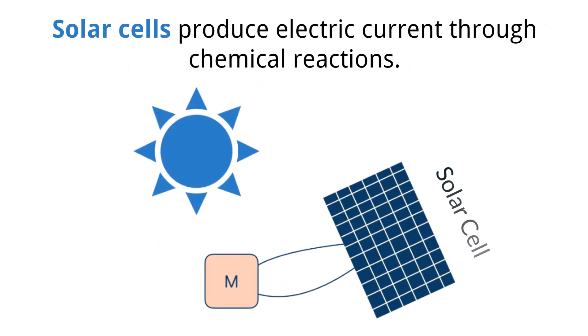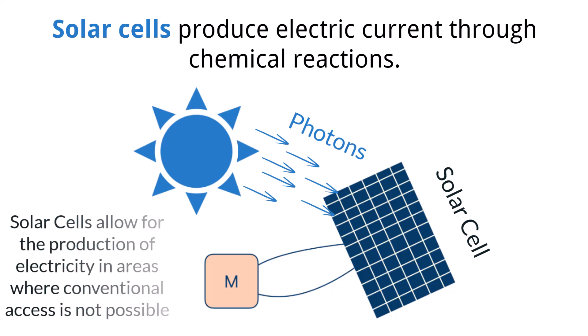Solar cells are an important renewable source of electricity, especially for places that cannot access conventional means of electrical production. Solar cells utilize photons released by the sun to cause electrons to be released, which are then connected to an external circuit for use. The benefits of solar cells are that they can be used for electrical production in places that cannot access normal forms of electrical production. However, they are currently still expensive and approximately 25% of energy is converted to electricity, making them less efficient than other forms of energy.